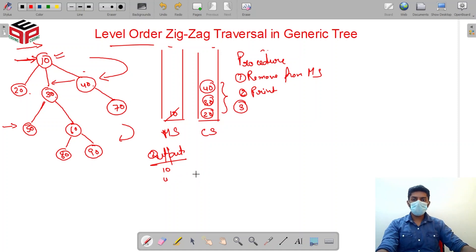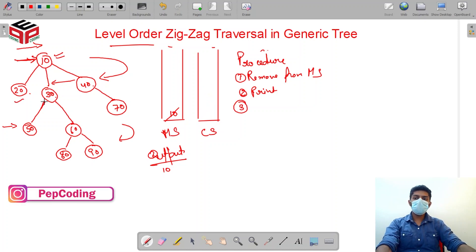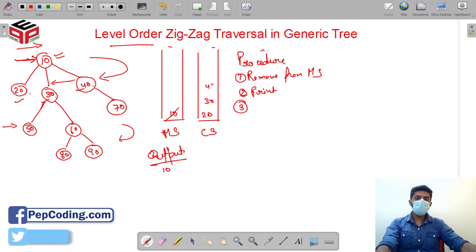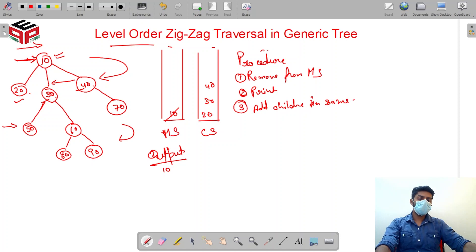So before adding, 10 has three children: 20, 30, and 40. So let's add them 20, 30, and 40. And also write the third step of the procedure: add children in same fashion.